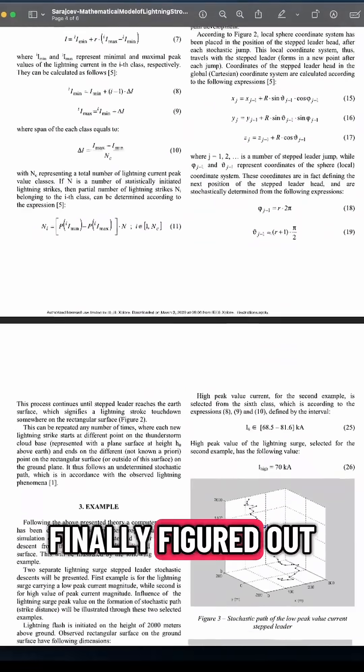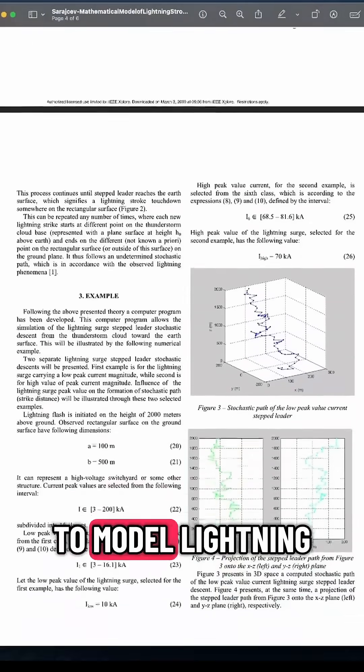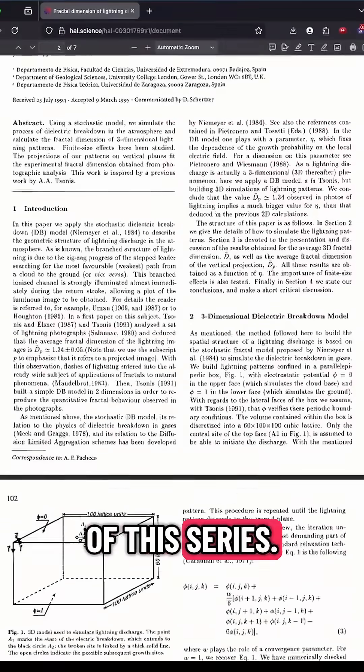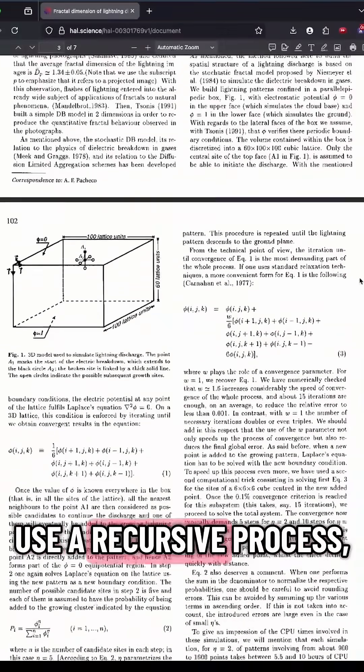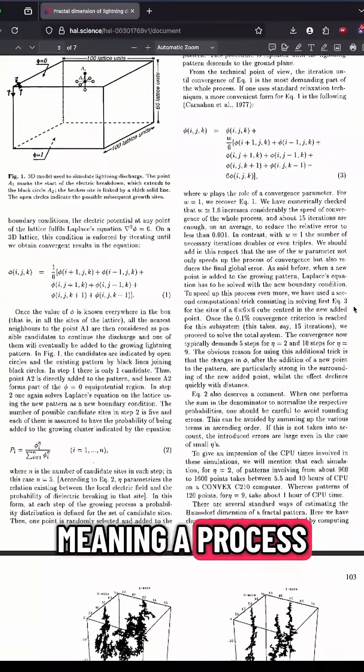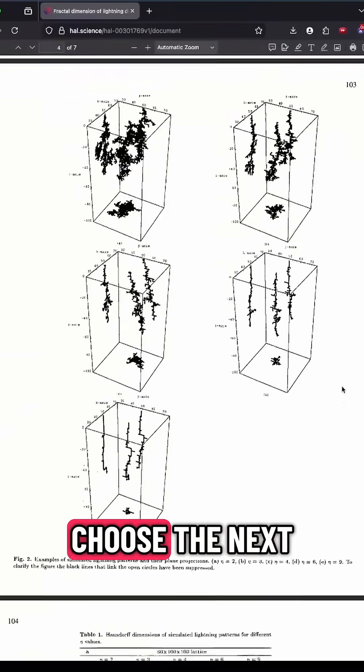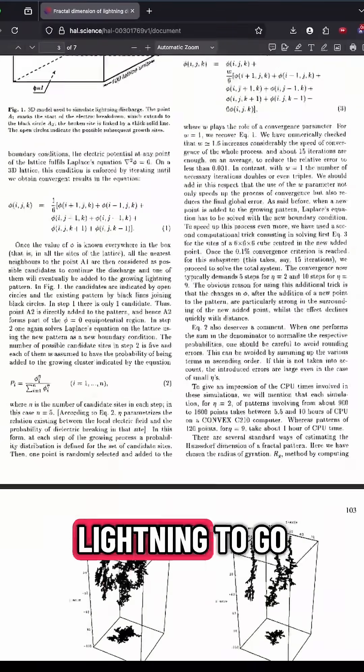The thing I finally figured out was that there was a way to model lightning by using randomness, like I used in part three of this series, and you can use a recursive process, meaning a process that depends on the steps before it, and you can choose the next place for the lightning to go.